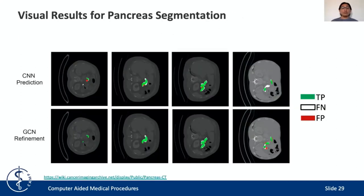This figure shows examples of the original CNN prediction on top and the GCN refinement on the bottom. True positives are indicated in green, false negatives in white, and false positives in red. For example, in the first column, our refinement strategy can eliminate some false positive regions originally present in the CNN prediction. From the second column, we can see how some false negative elements are recovered. However, in the fourth column, the network can also produce some small regions of false positive components.